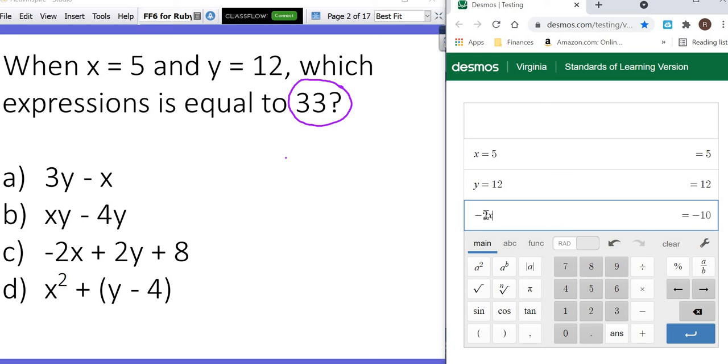Negative 2x plus 2 times y plus 8. That gives me 22. So I better, I hope d is the answer. Let's delete that and go to x squared plus, now there's parentheses, so make sure to put them there, y minus 4, close parentheses, and that gave us 33. So in this case, b is our answer.